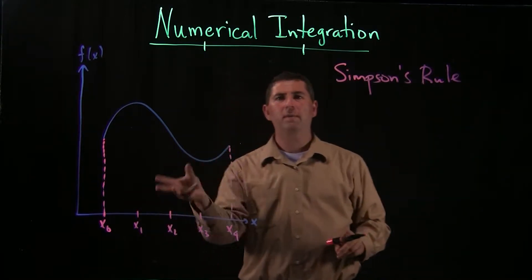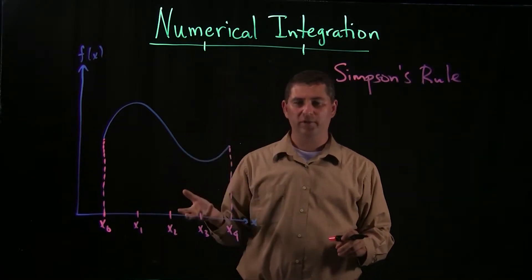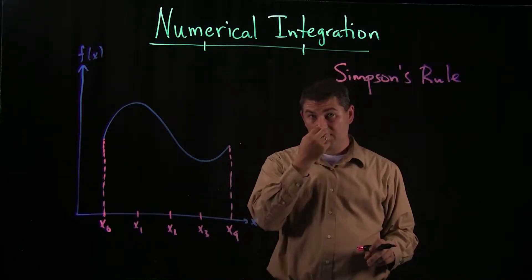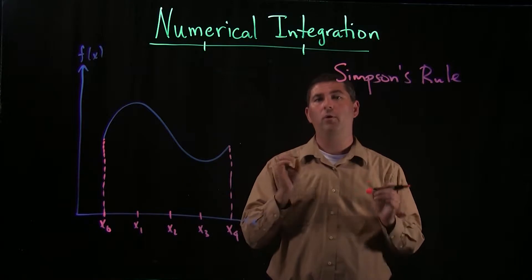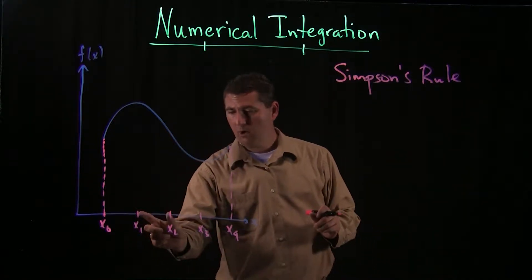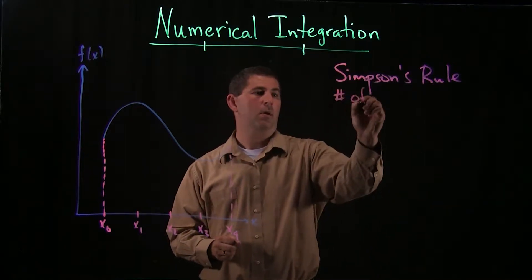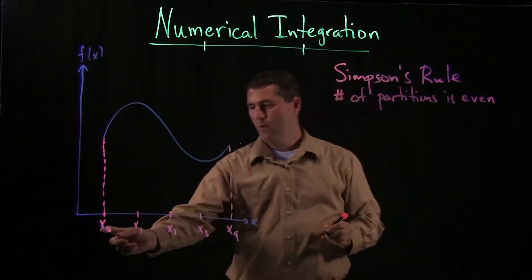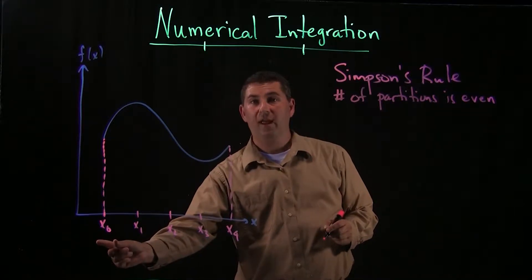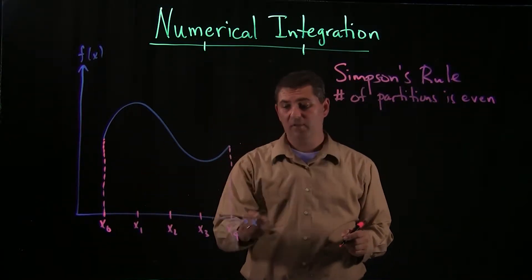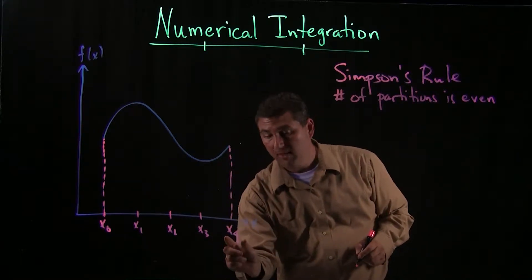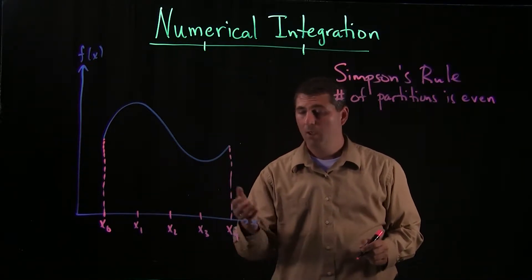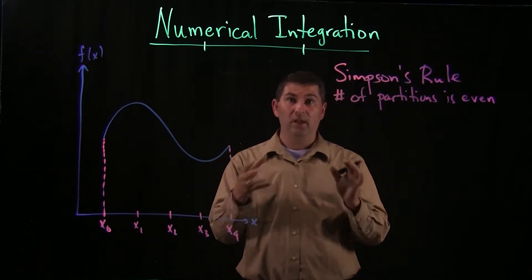So there's going to be a small modification from the previous rules that we've learned. Here, you'll notice instead of stopping at x3, I've gone all the way up to x4. And this is not an accident. Whenever you use Simpson's Rule, we are going to insist that the number of partitions is an even number. And if you always get into the habit of labeling your first x-coordinate with x sub zero, then when you're using Simpson's Rule, you know that this number on the end, x sub whatever this n is, that needs to be an even number. Because this tells you how many partitions you have.